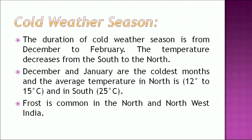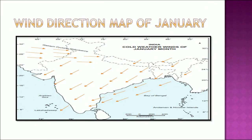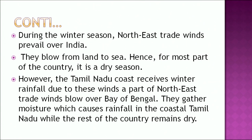The cold weather season lasts from December to February. Temperature decreases from south to north; December and January are the coldest months, with average temperatures of 12 to 15 degrees centigrade in the north and about 25 degrees centigrade in the south. Frost is common in north and northwest India. During winter, northeast trade winds prevail over India, blowing from land to sea, making it a dry season for most parts. However, the Tamil Nadu coast receives winter rainfall due to these northeast winds.